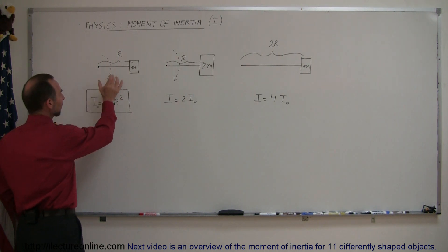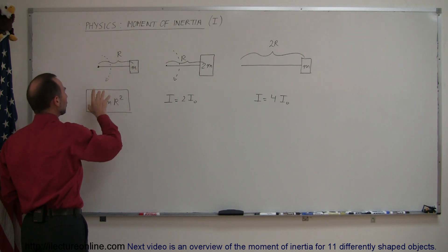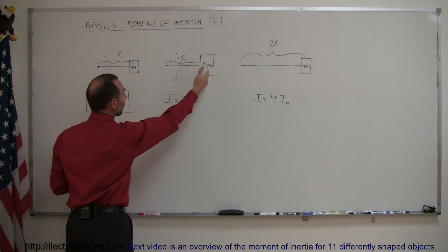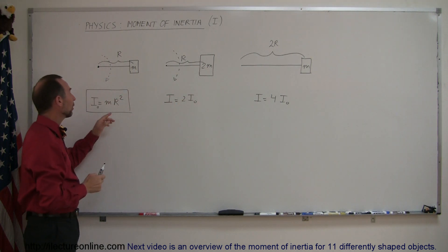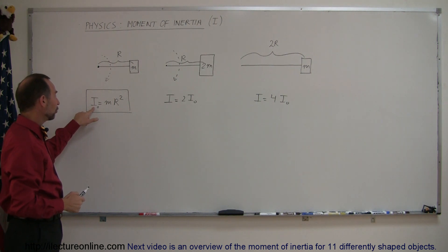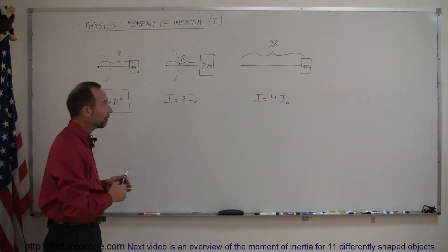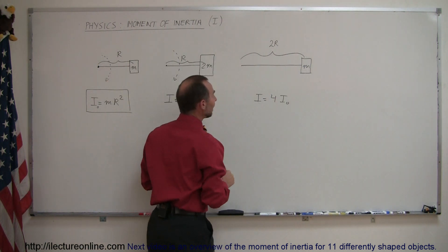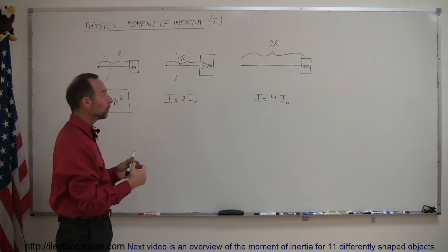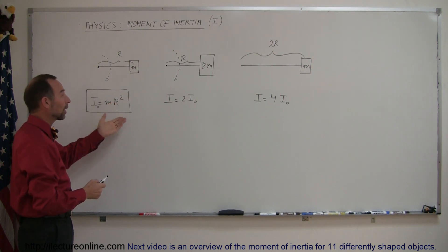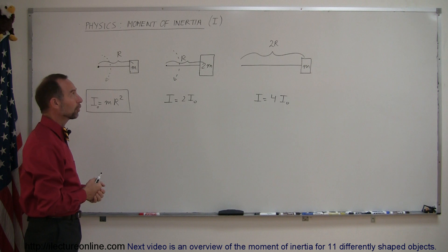When all the mass is located a distance r away from the point of rotation, the moment of inertia is the mass times the radius squared. If we double the mass, we double the moment of inertia because the moment of inertia is a function of the mass to the first power. However, if we double the radius, then the moment of inertia is quadrupled because the moment of inertia is a function of the radius squared.